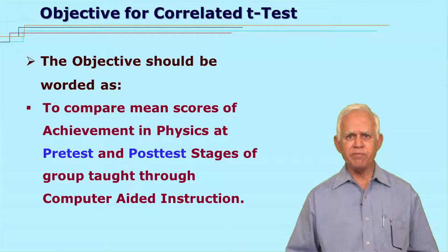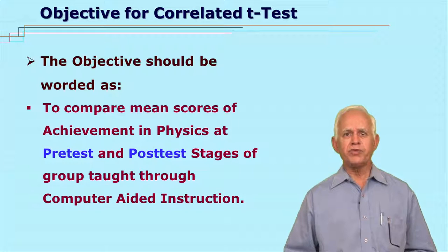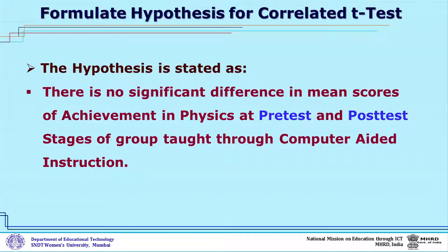The data must satisfy the assumptions of the correlated t-test; if not, data cannot be analyzed with it. For the correlated t-test, the objective can be worded as: 'To compare mean scores of achievement in physics at pre and post stages of the group taught through computer aided instruction.' For this objective, the hypothesis can be worded as: 'There is no significant difference in mean scores of achievement in physics at pre and post stages of the group taught through computer aided instruction.' This hypothesis has been formulated in the null form.